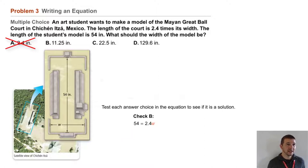We can check choice B. We'll substitute 11.25 into the equation, and we're going to find that 54 does not equal 2.4 times 11.25, that's 27. So choice B is also not correct.